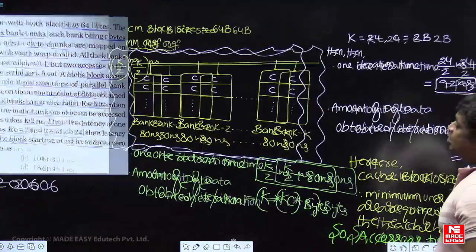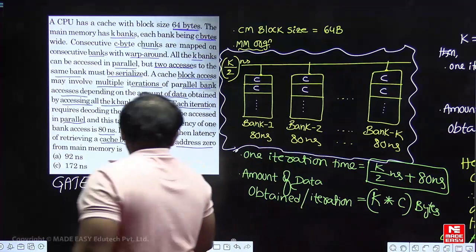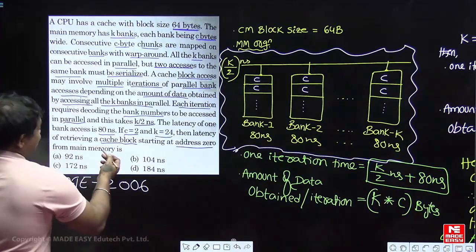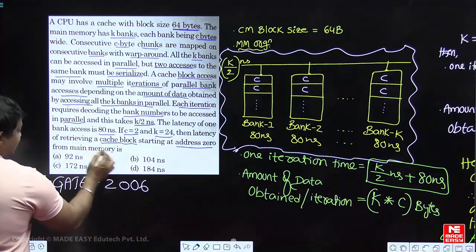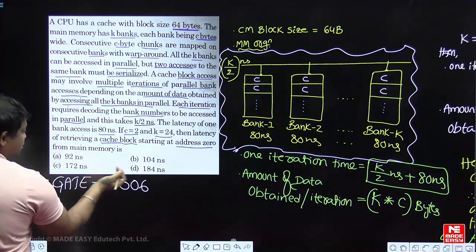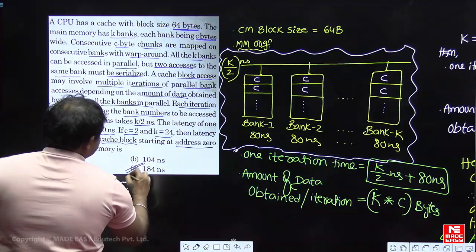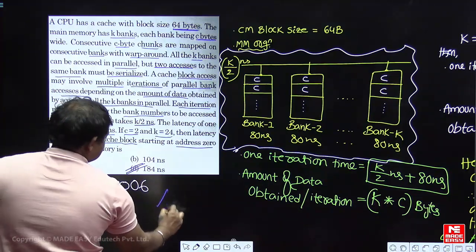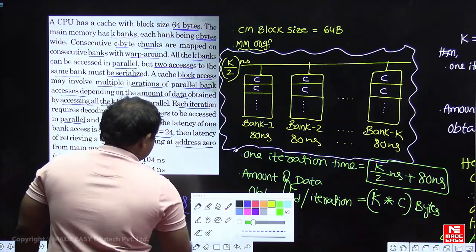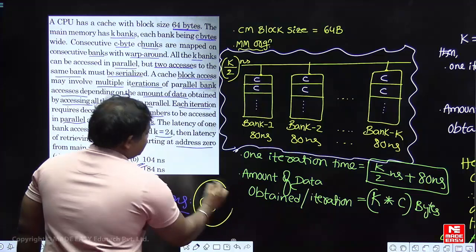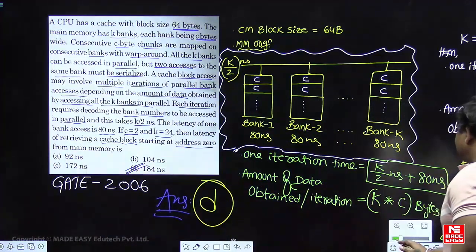Going back to the question — what is the time required to access the cache block starting from address 0? This is a multiple choice question and the answer is D, which matches 184 nanoseconds. Hope you understand the solution.